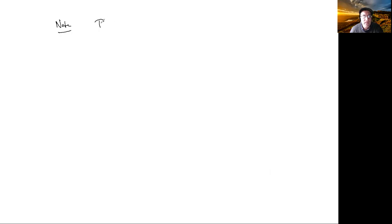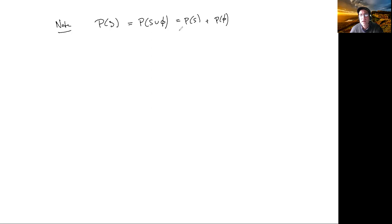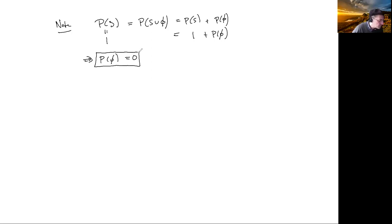Now let's derive a consequence. Consider P of S: that's the same as P of S union the empty set, since the empty set and S are mutually exclusive. By axiom 3, this is P of S plus P of the empty set. But axiom 2 says P of S is 1. So we get P of the empty set plus 1 equals 1, and therefore P of the empty set has to equal 0. That's a key result derived just from the three axioms.